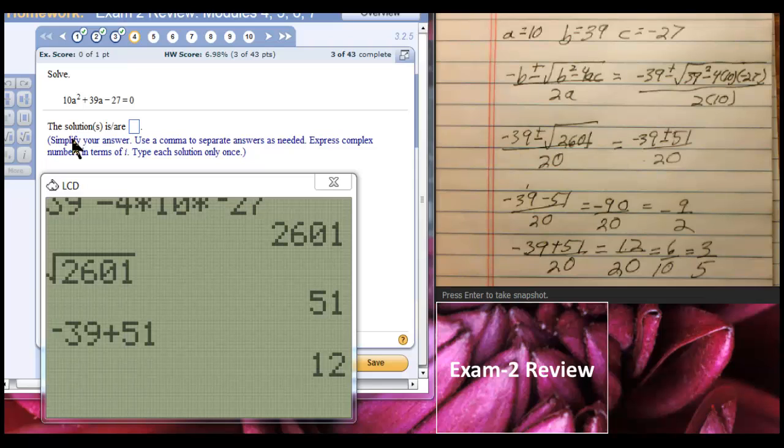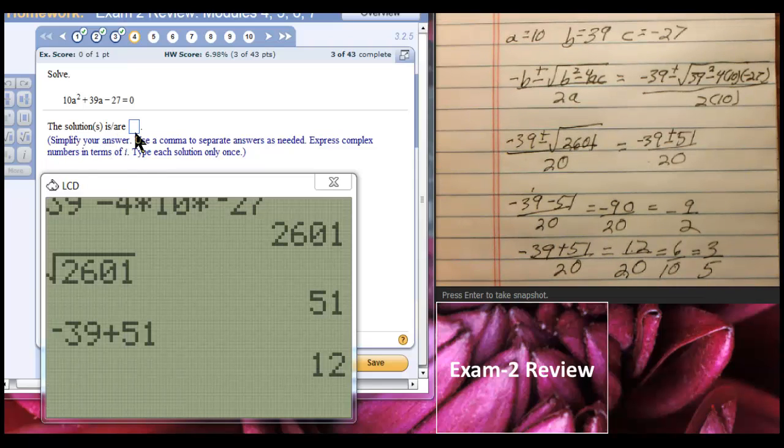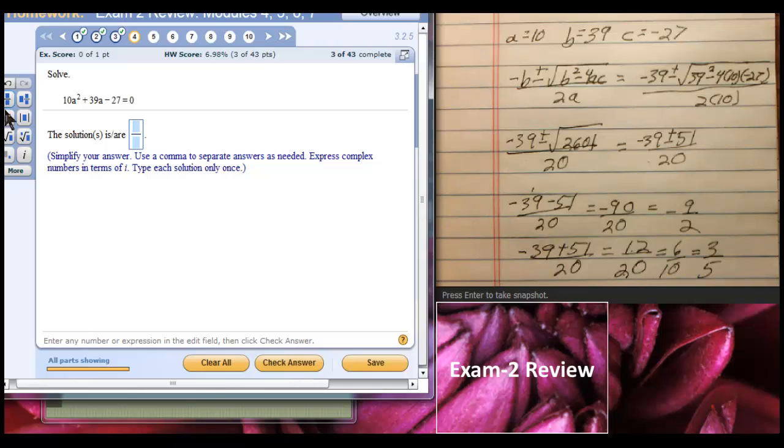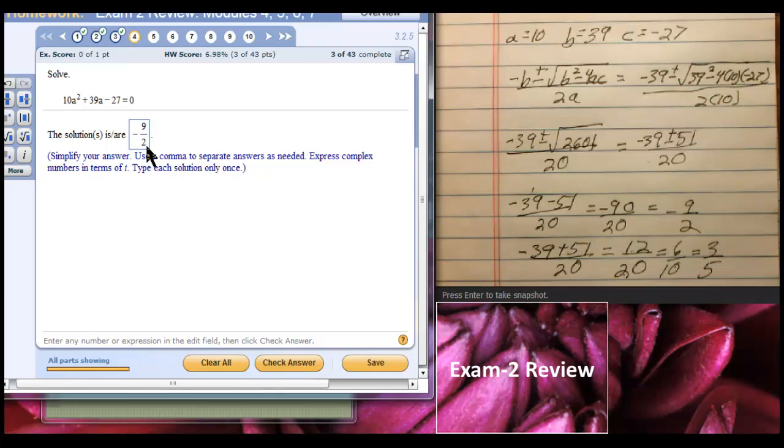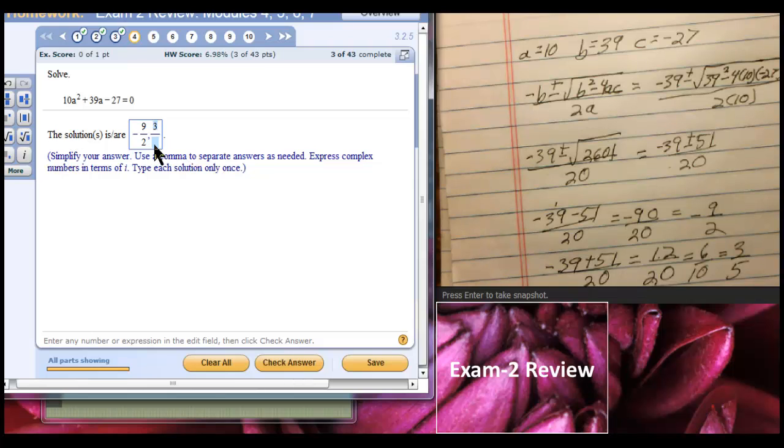Let's see if that's right. The solutions are, let's say three-fifths. Well, no. MyMathLab likes the negative answer first. Let's keep it happy. Negative 9 over 2, comma, fraction tool 3-fifths. Ah!